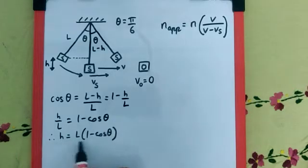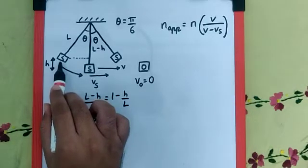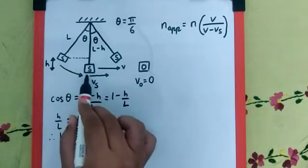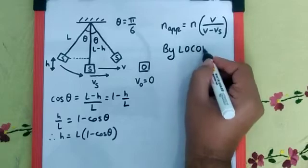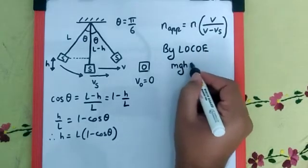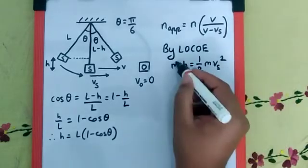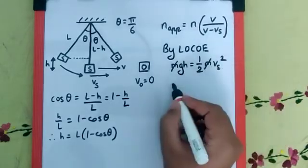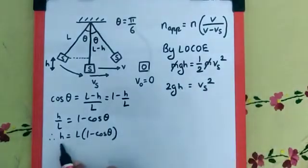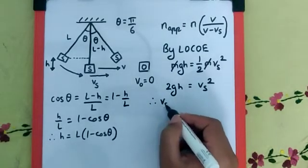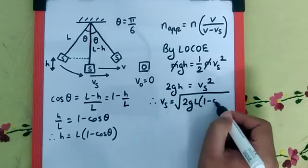So from this height it falls down. So can I say at this point it is the potential energy which gets convert into kinetic energy at this point. So by law of conservation of energy we can say MGH the potential energy gets convert into half M Vs square. So M gets cancelled. We get 2GH is equal to Vs square. We can substitute this H over here. And so we get Vs is equal to root of 2GL bracket 1 minus cos theta.